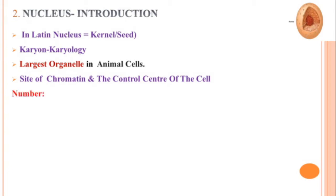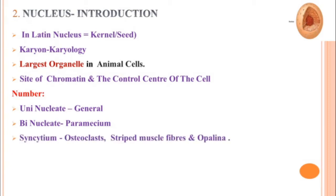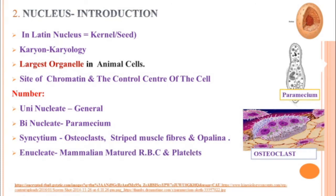If you look at physical features like number, size, and shape — first, we will discuss number. Generally, a cell has one nucleus; that condition is called uninucleate. Sometimes paramecium and similar protozoans may have two nuclei — this condition is called binucleate. Some cells like osteoclasts, striped muscle fibers, and opalina may have more than two nuclei; that condition is called syncytium. If cells are devoid of a nucleus, that condition is called enucleate — mammalian matured RBCs and platelets are examples.